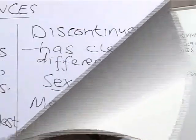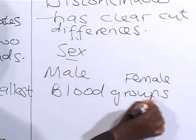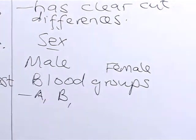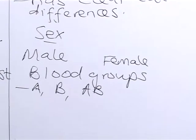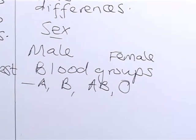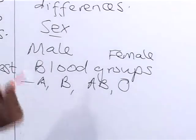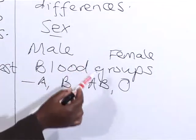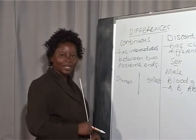When we consider blood groups, we have blood group A, blood group B, blood group AB, and blood group O. If you are in blood group A, you cannot be found between blood group A and blood group B. You are either in blood group A, B, AB, or O. That's why discontinuous variation has clear-cut differences.